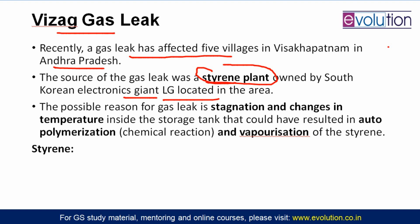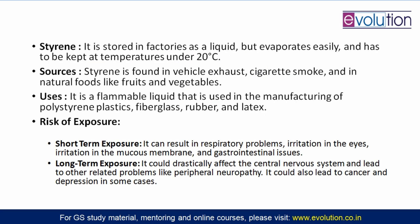The gas leaked because there was stagnation and temperature changes in the storage tank — higher temperature led to auto-polymerization. That means styrene polymerized itself, escaped from the storage tank, evaporated and entered the atmosphere. Once converted from liquid state to vapor state, it went into the atmosphere and affected people. Styrene is colorless, stored in factories as liquid, but evaporates easily above 20 degrees Celsius.